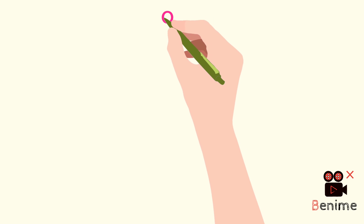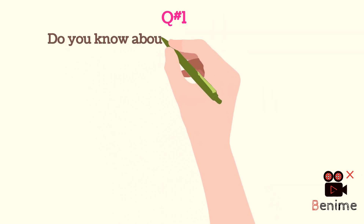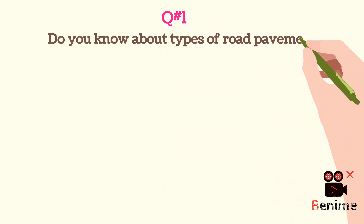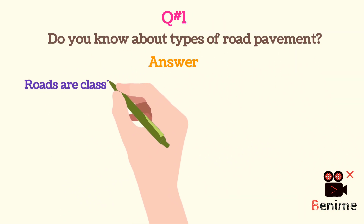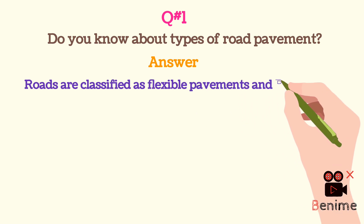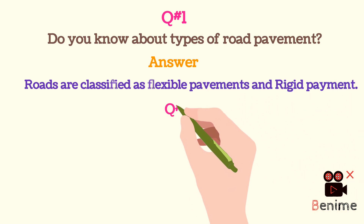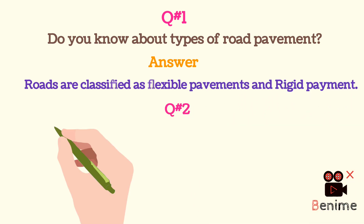Question 1: Do you know about types of road pavement? Roads are classified as flexible pavement and rigid pavement.